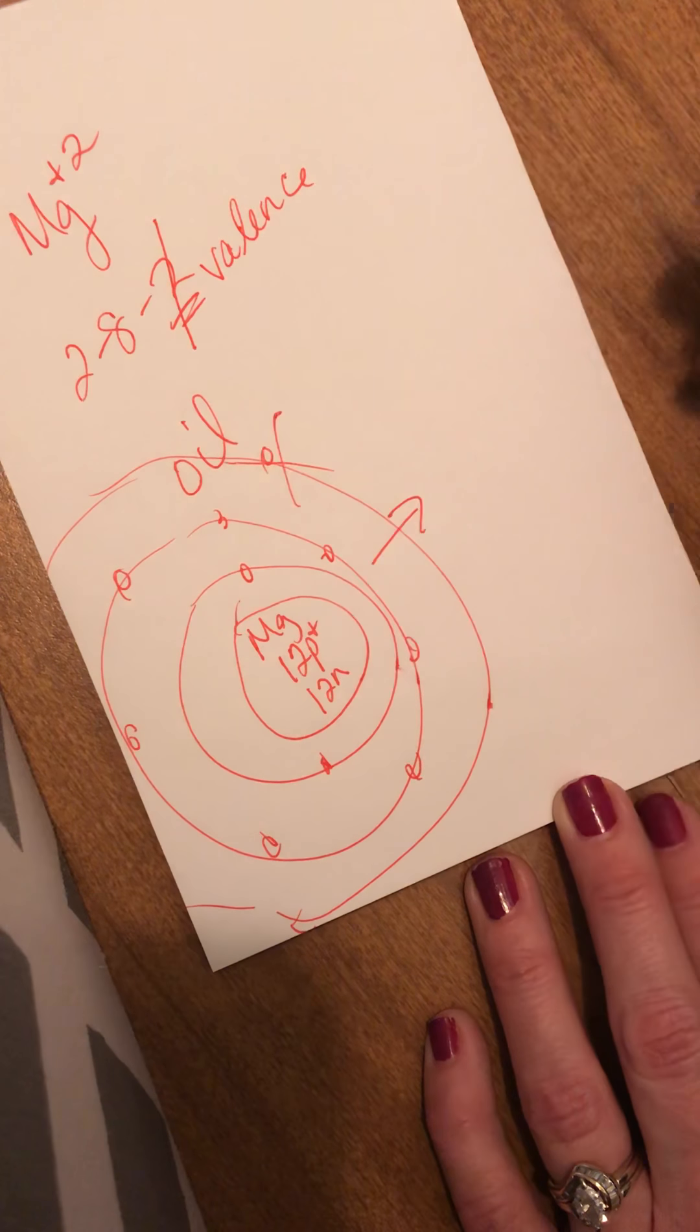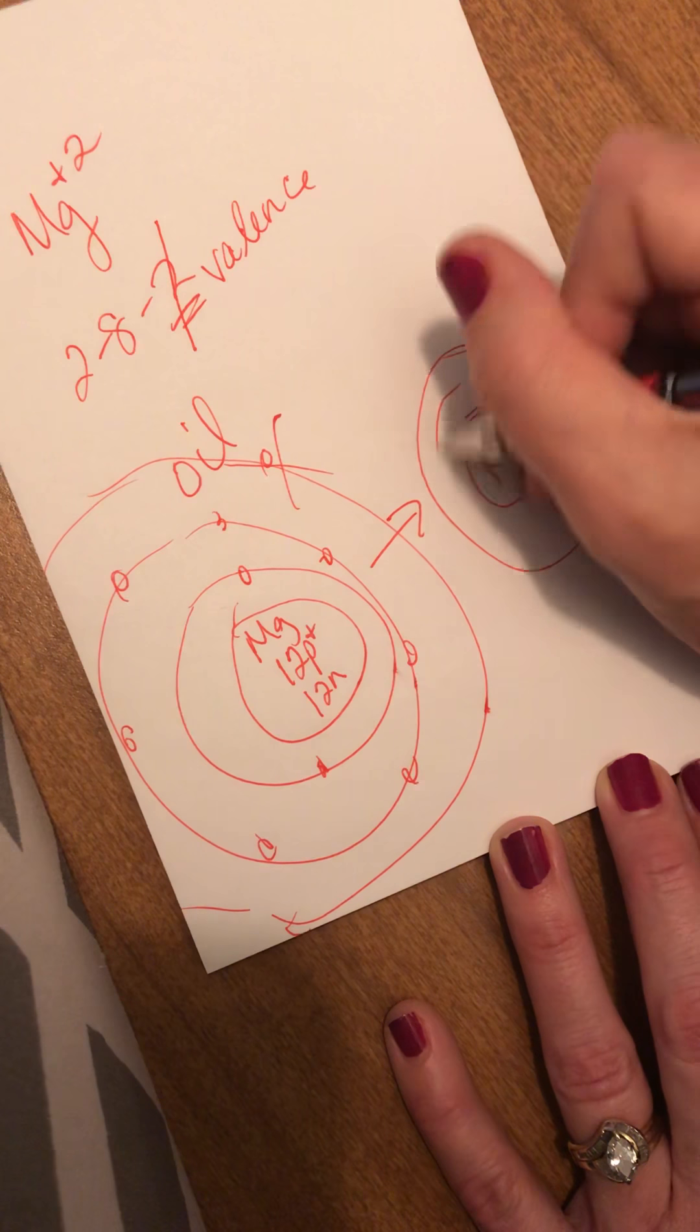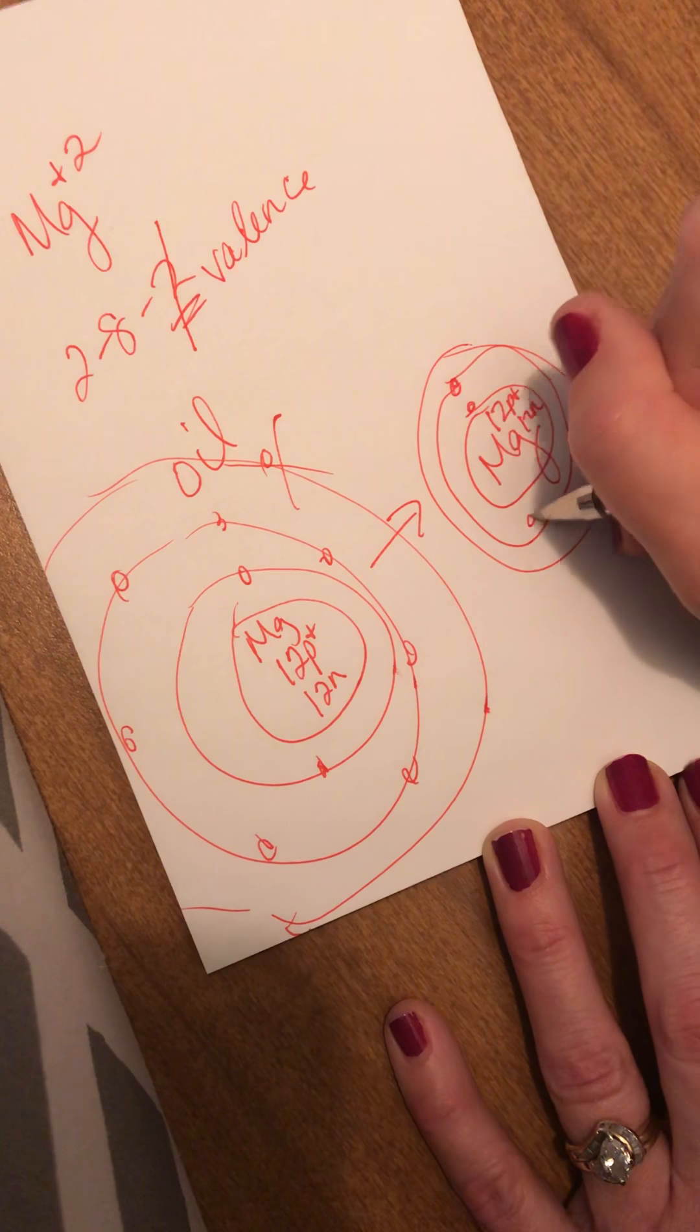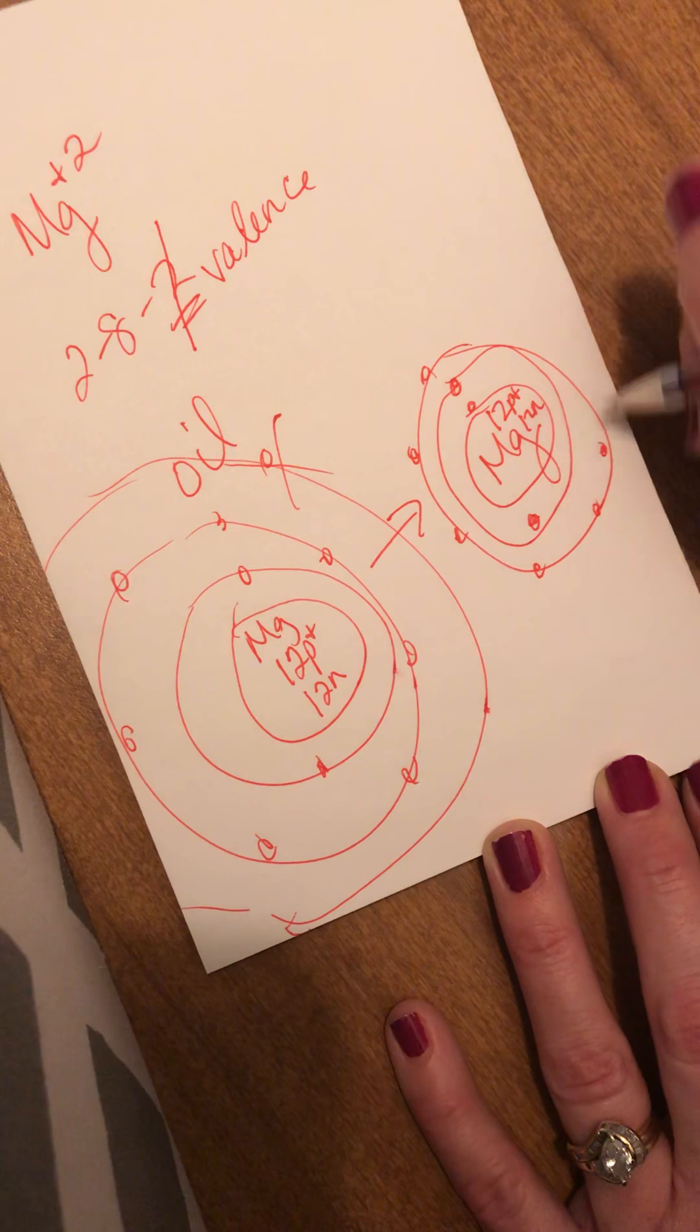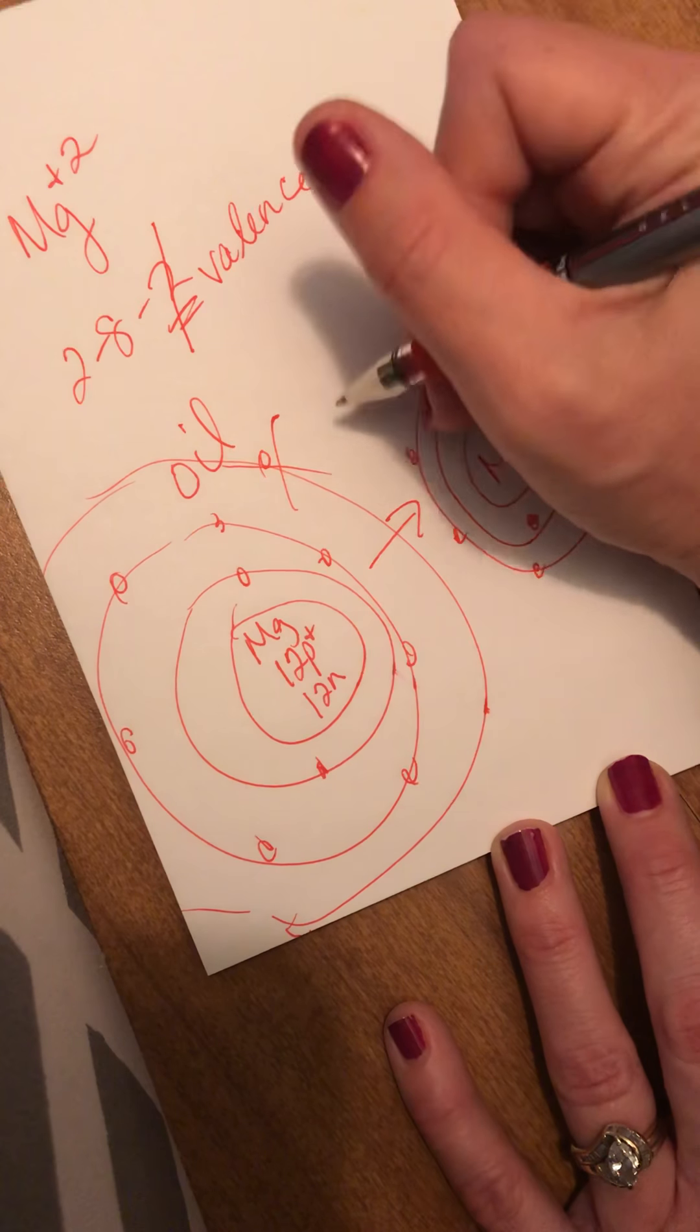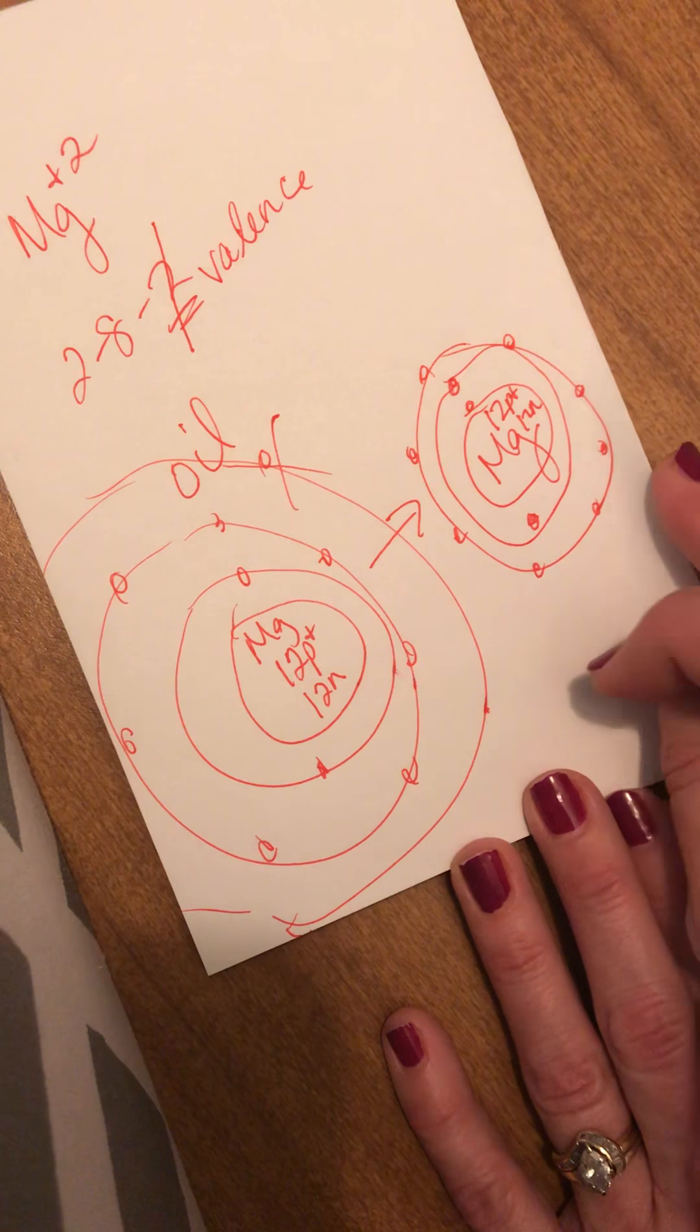So its size would decrease. It would only have 2 orbitals. So here's my nucleus with my 12 protons and my 12 neutrons. And then I would have 2 here, 8 here. And the 2 on the outside would be lost. So Mg plus 2 has lost 2 electrons. And it also loses radius. Its radius becomes smaller.